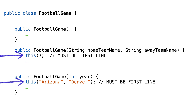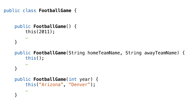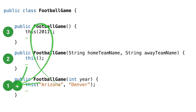When we do use it, it must be the first line in the constructor. We also cannot do this more than once — meaning you cannot call more constructors once you've already called another constructor. You only get one call. And the big gotcha is we cannot chain constructors in a way that would create a loop. Java won't even let us compile constructors with a loop — we'll get an exception.